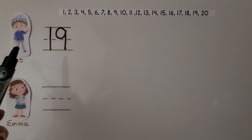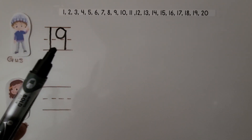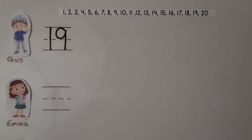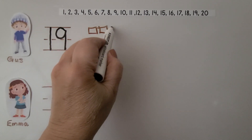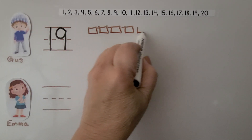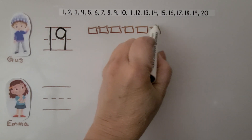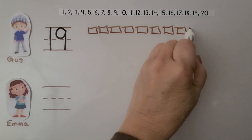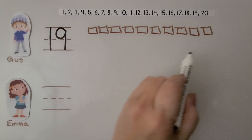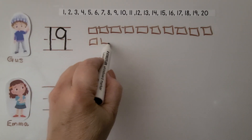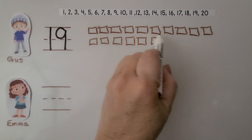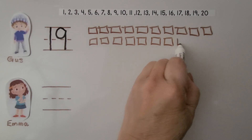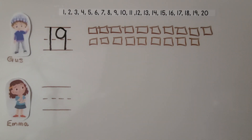Here's Gus. Gus has 19 crayons. We can draw 19 cubes to show his 19 crayons. We count 1 through 19, making one cube for each of his crayons. We have one cube for each of his crayons.